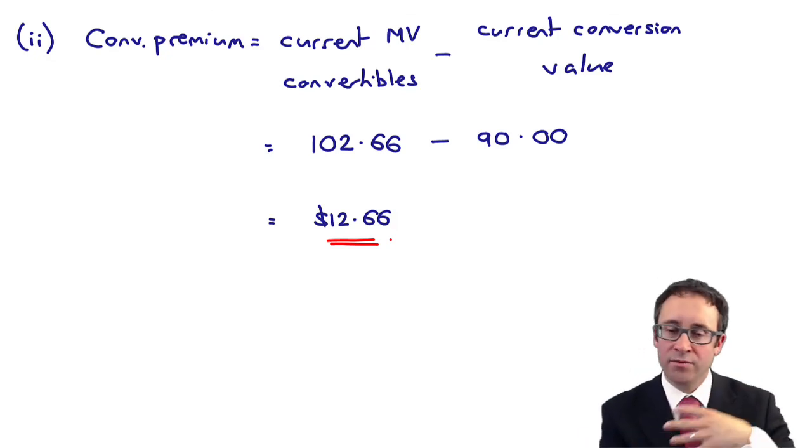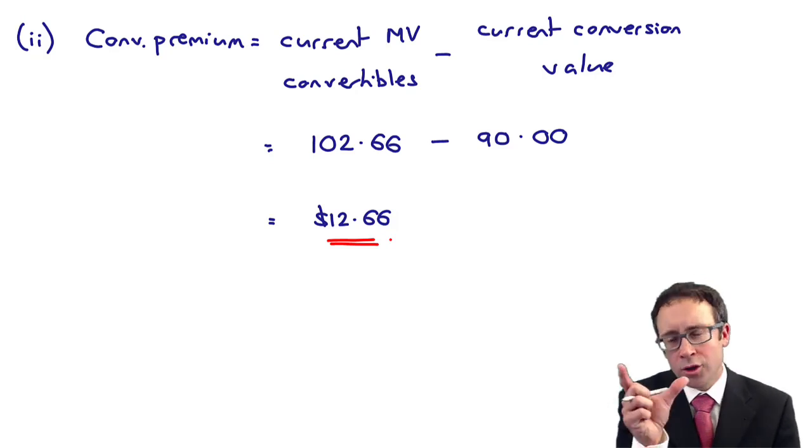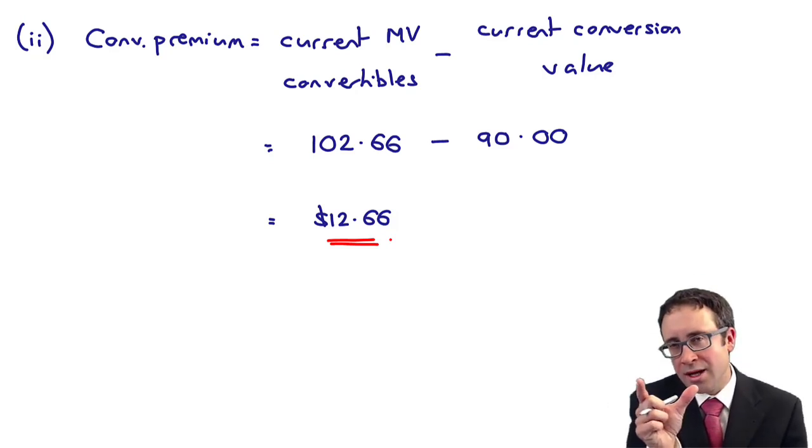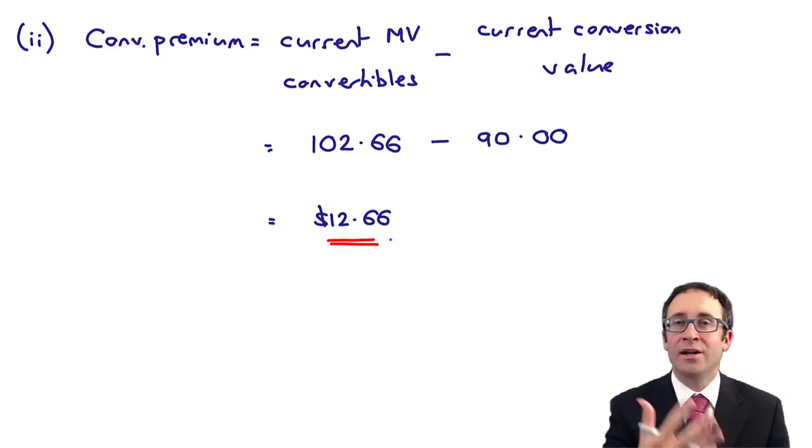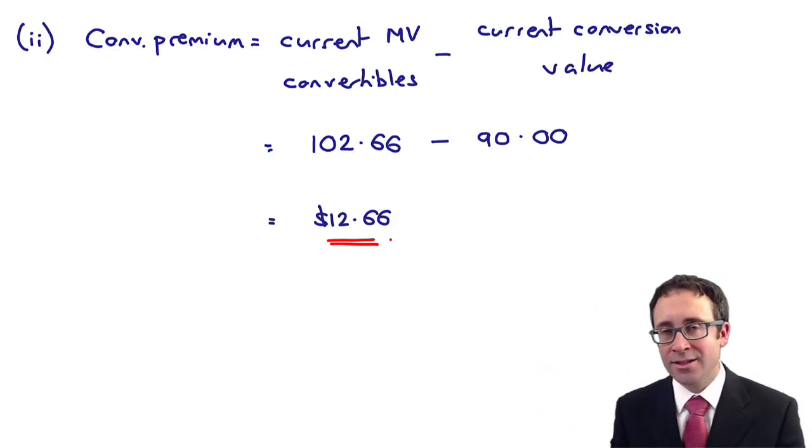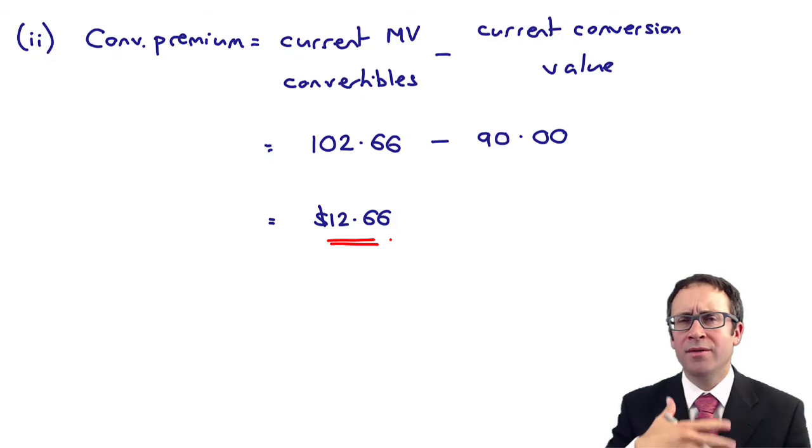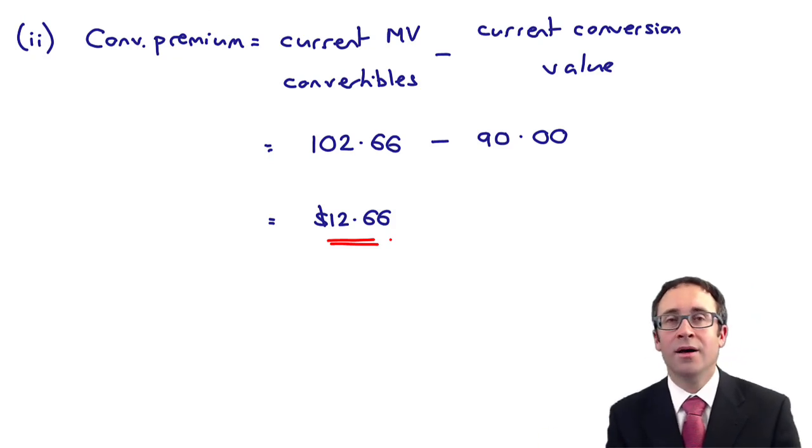So the current conversion premium is 12.66. The difference between what you would get if you converted for shares now versus the value of the convertible. What should happen is that should steadily get smaller and smaller as the current conversion value increases, as the value of shares increases, because you would hope that by getting the investment from the investors, you would invest that money wisely and therefore the share price would increase. If the business makes more profits, the shareholders react and push that share price upwards. The conversion premium should reduce the closer that we get to the conversion date.